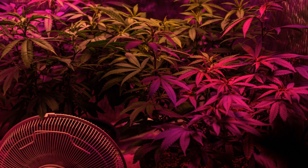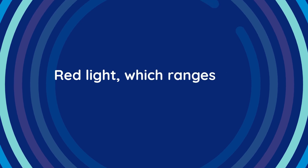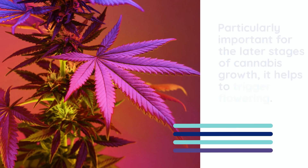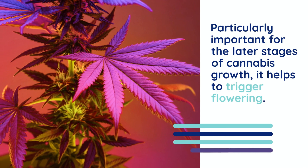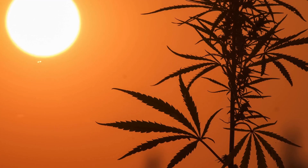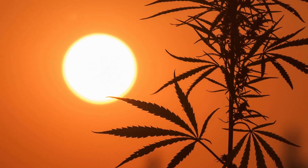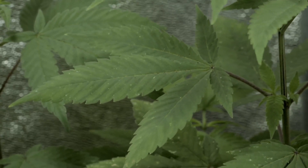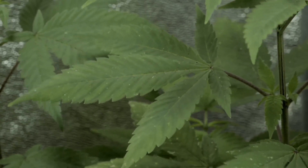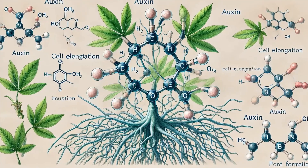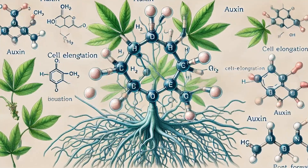Red light, on the other hand, can be considered the flowering and bud development specialist. Red light, which ranges from 600 to 700 nanometers, has a longer wavelength and lower energy compared to blue light, and is particularly important for the later stages of cannabis growth. It is crucial for triggering the transition from the vegetative stage to the flowering stage by influencing the plant's photoperiod — its internal clock that senses the length of day and night. As cannabis plants are photoperiod sensitive, they begin to flower when they receive around 12 hours of uninterrupted darkness, signaling that it's time to start producing flowers and triggering the reproductive phase. As a result, the plant enhances the production of phytohormones like auxins, which regulate cell elongation and bud development.